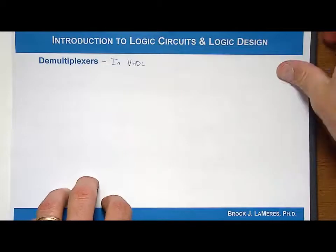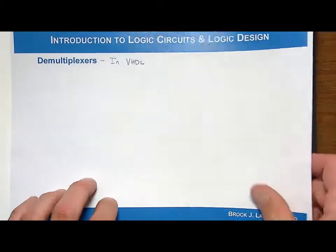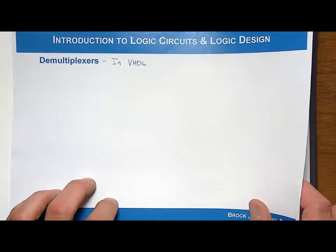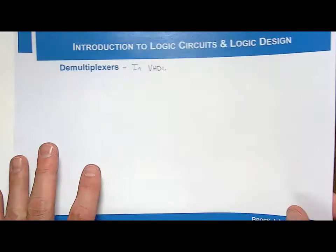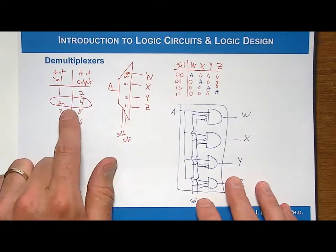So let's start off by doing a concurrent signal assignment with logical operators. And remember, this does not necessarily exploit the capability of VHDL. It's essentially a text-based netlist. But let's do the 2 to 4 example.